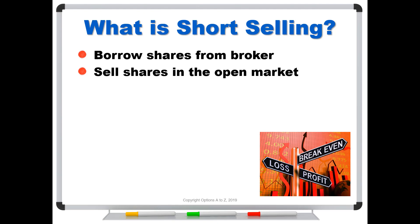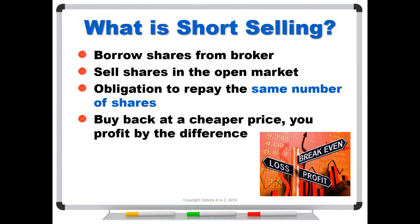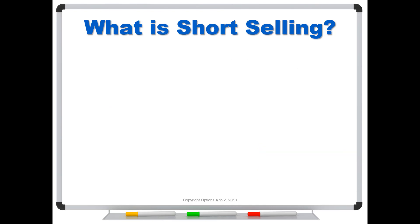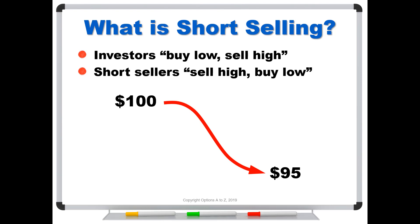The catch is that when you do that, you have an obligation to repay the same number of shares back to the broker — not the same dollar amount. So even though you might have shorted 100 shares at $100 for $10,000 worth of stock, you owe 100 shares back, not $10,000. What you're hoping to do is buy them back at a cheaper price and profit by the difference. Investors buy low and sell high; short sellers do the opposite — they sell high and buy low, just in reverse order.